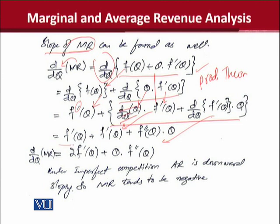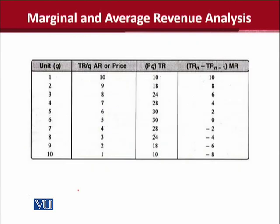यह same terms हैं इसलिए इन्हें add करके लिख दिया, whereas इसको वैसे ही mention किया जैसे above step में था. यह हमारे पास slope of the marginal revenue curve in case of the imperfectly competitive market है. And it tends to be negative when AR is downward sloping. इसकी एक छोटी सी मिसाल हम देख लेते हैं — when AR is declining, marginal revenue at some stage turns negative. इस चीज़ को हमने in the form of a table भी verify किया.